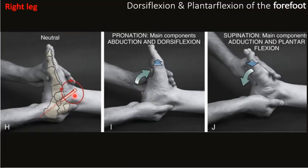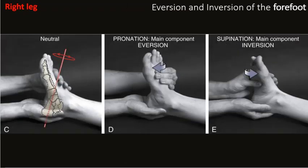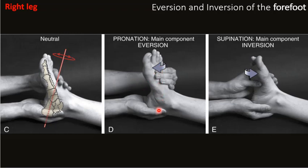When looking at the midtarsal joint clinically, you stabilize the rear foot so it can't move and just move the forefoot, isolating dorsiflexion-plantarflexion at that joint. If you didn't stabilize and pushed this way, you'd get dorsiflexion from both the talocrural and midtarsal joints. Same for inversion-eversion: block the rear foot and move the forefoot, and you get forefoot inversion-eversion relative to the rear foot. Eversion is the front of the foot turning out; inversion is the front of the foot turning in. This introduces the concept that the forefoot can move independently of the rear foot and vice versa.